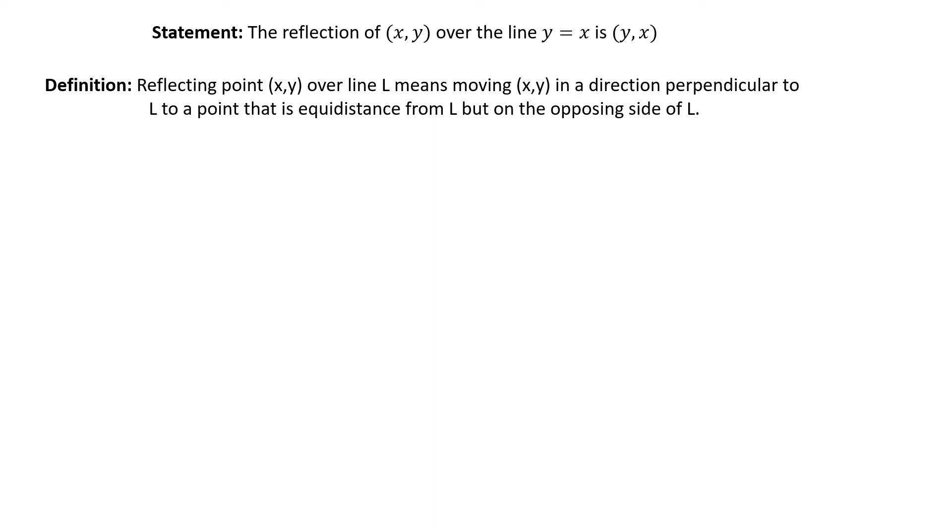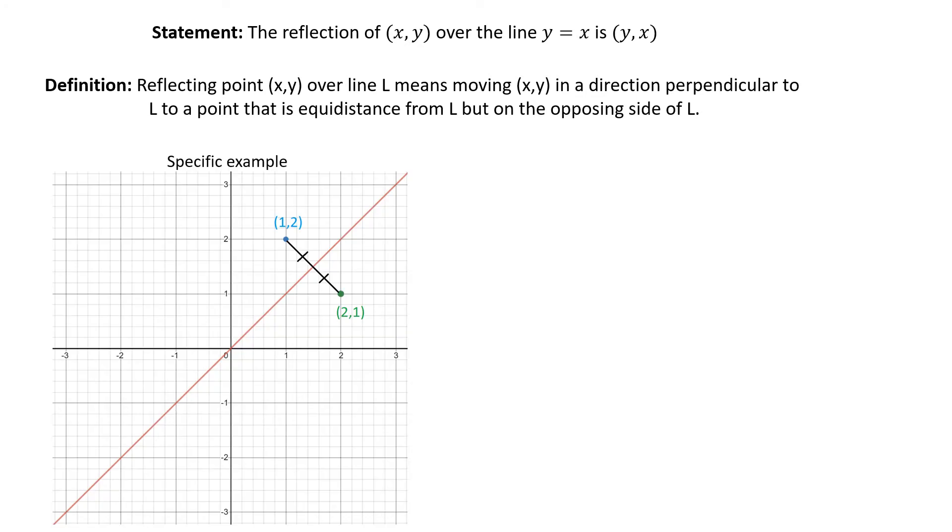Now that we have that, here's just one example of our statement. This specific example starts with the point (1, 2), and it's reflected over y equals x, or our line L, to (2, 1). Now we can see in this diagram that (1, 2) is moved in a perpendicular direction to (2, 1), so the black line is perpendicular to the red line. And (1, 2) and (2, 1) are equal distance away from the red line. So you could say, look, it works. We're proving the statement.